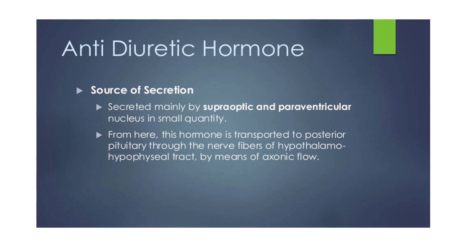Antidiuretic hormone is also known as vasopressin. It is a hormone synthesized as a peptide pro-hormone in neurons in the hypothalamus, mainly by the supraoptic and paraventricular nuclei. It is then converted to AVP — arginine vasopressin — which travels down the axon to the posterior pituitary and is released into circulation in response to extracellular fluid hypertonicity.